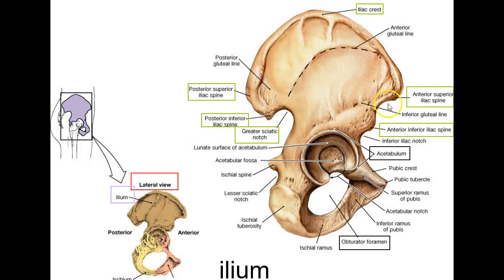Remember, a spine doesn't always look like a spine. These two protrusions on the ileum are called iliac spines. On the anterior side: the anterior superior iliac spine and the anterior inferior iliac spine. On the back: the posterior superior iliac spine and the posterior inferior iliac spine. These are important because muscles attach to them.